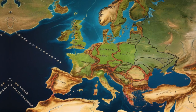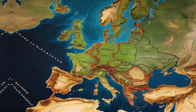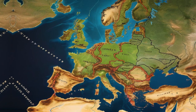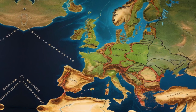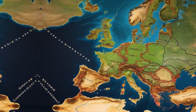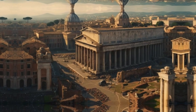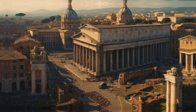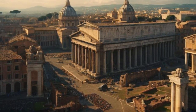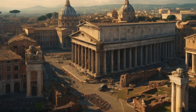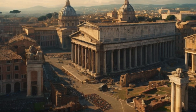One of these challenges was the invasion of the Goths, a Germanic people who lived north of the Danube River. The Goths were fleeing from the Huns, a fierce nomadic tribe from Central Asia. They asked the Romans for permission to settle in their lands as refugees. The Romans agreed, but treated them poorly. They exploited them, starved them, and sold them into slavery. The Goths rebelled against the Romans in 378 AD. They fought a decisive battle at Adrianople, where they defeated and killed the Emperor Valens. This was a huge blow to the Roman army, which lost most of its elite troops. The Goths then roamed freely across the Balkans and Greece, plundering and raiding as they went.